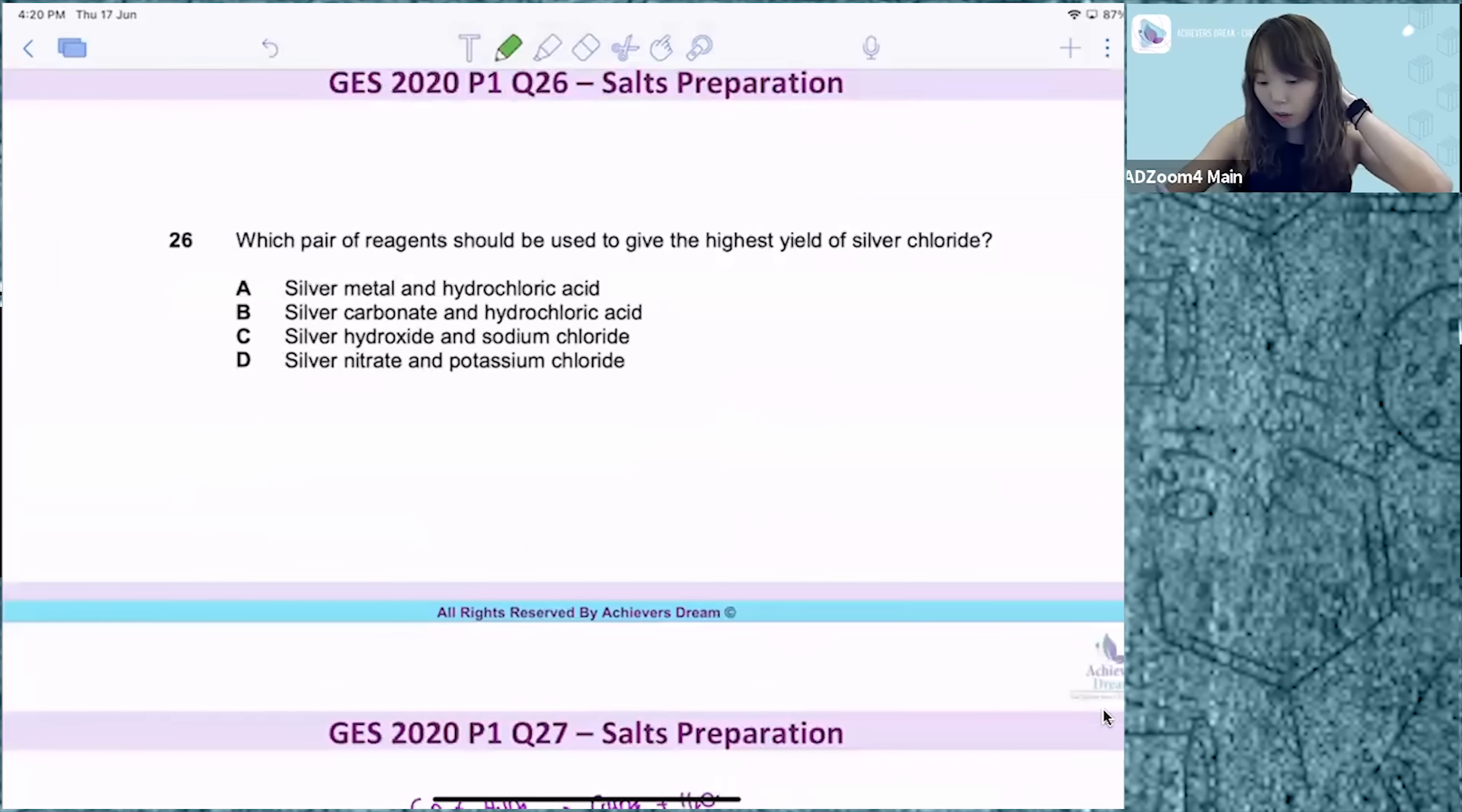For question 26, which pair of reagents should be used to give the highest yield of silver chloride? This is a salt prep method.